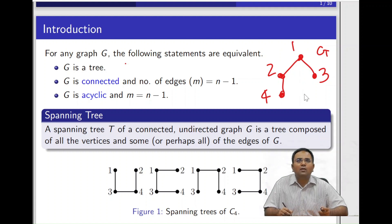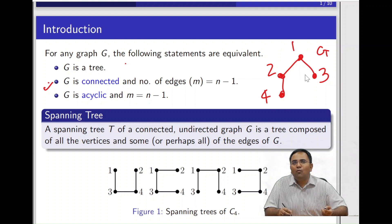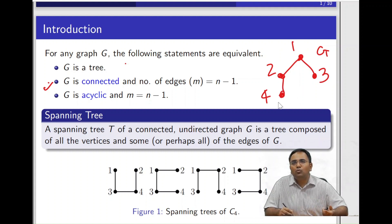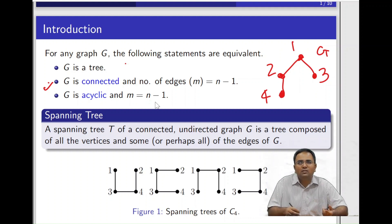Now let's try to understand the definition of a tree. The first definition says this particular structure is minimally connected. Minimally connected means if you remove one edge from this structure, the structure will become disconnected — and that one edge can be any edge. In other words, between any pair of vertices there exists a unique path. For example, if I want to go from four to one, I must go via two only. So the structure is connected, with a unique path between any pair of vertices.